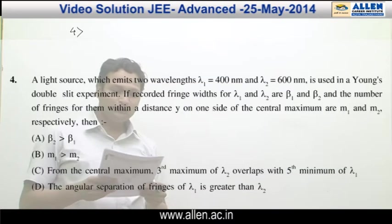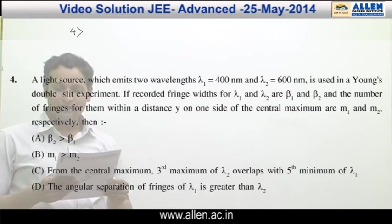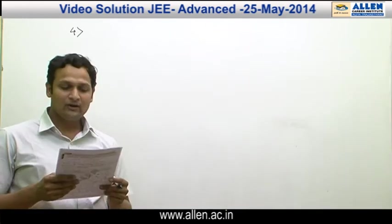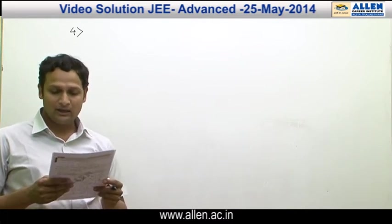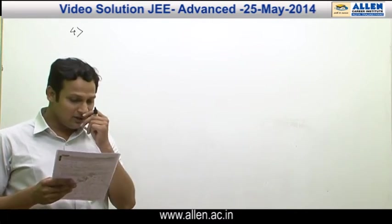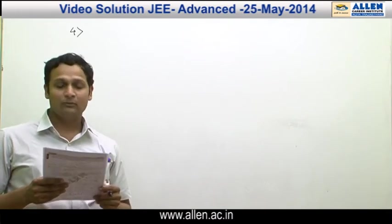Question number 4. A light source which emits two wavelengths lambda 1 and lambda 2 is used in a Young's double slit experiment. If recorded fringe width for lambda 1 and lambda 2 are beta 1 and beta 2, and the number of fringes for them within the distance y on one side of the central maximum are m1 and m2.